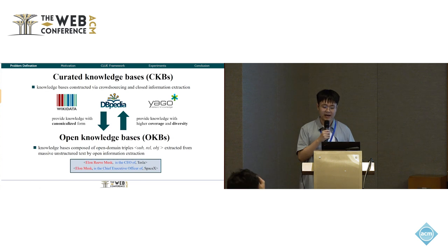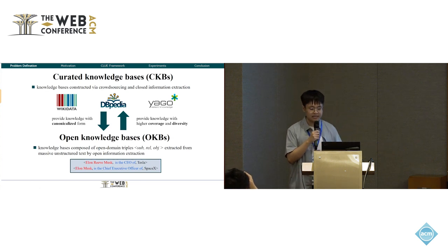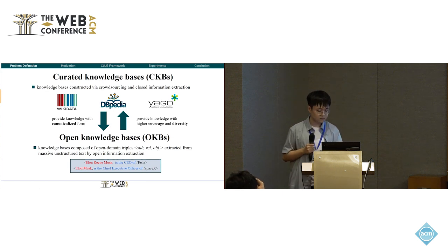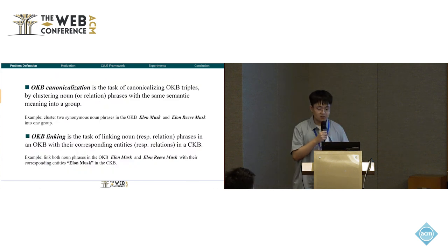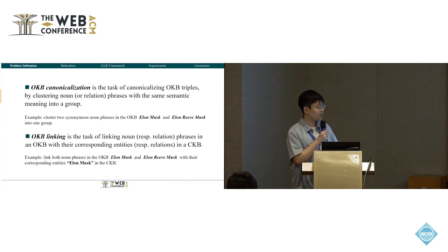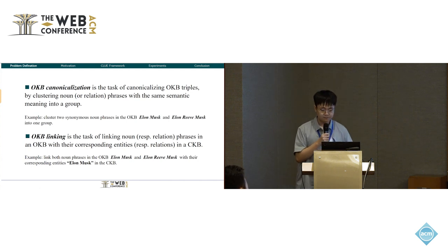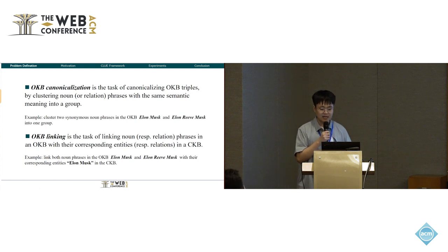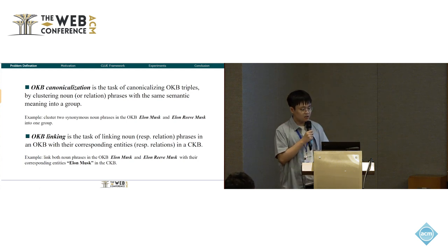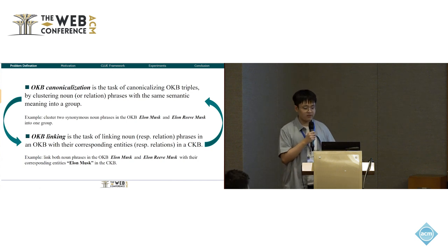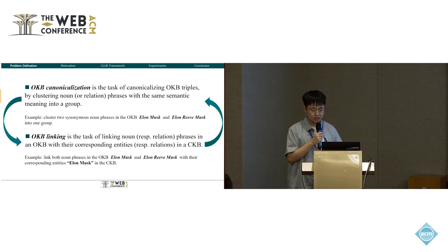To canonicalize OKBs and achieve better knowledge integration between CKBs and OKBs, OKB canonicalization and OKB linking are proposed as two important tasks. OKB canonicalization is a task of canonicalizing OKB triples by clustering noun phrases with the same semantic meaning into a group, and OKB linking is a task of linking noun phrases in OKB with their corresponding entities in a CKB. From the definitions, we can see that these two tasks are tightly coupled and complementary with each other, and one task can benefit significantly from the other. However, previous studies just solved these two tasks separately, and in this work we aim to explore methods to make these two tasks reinforce each other.